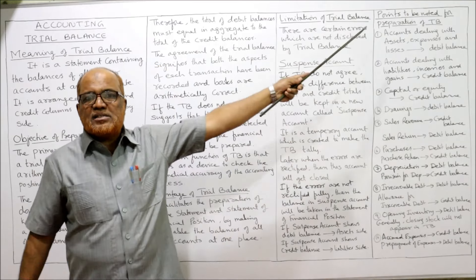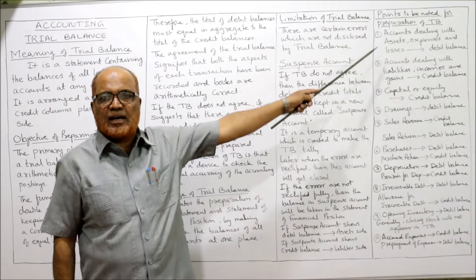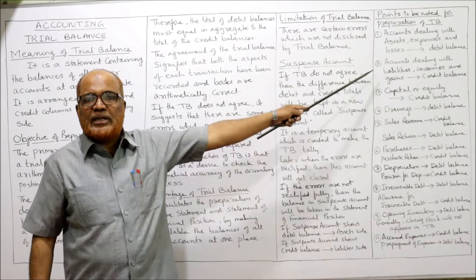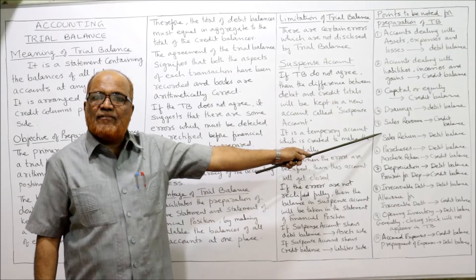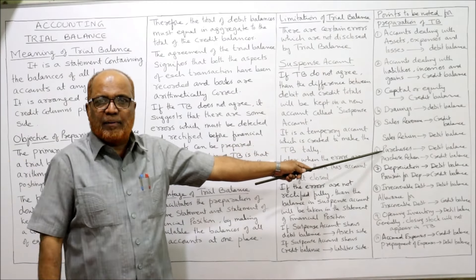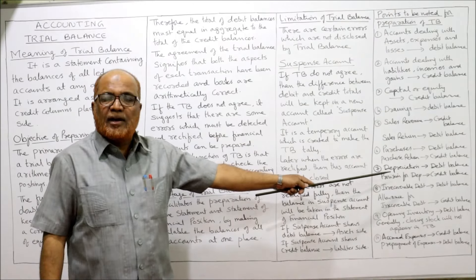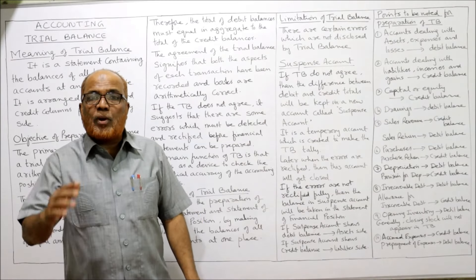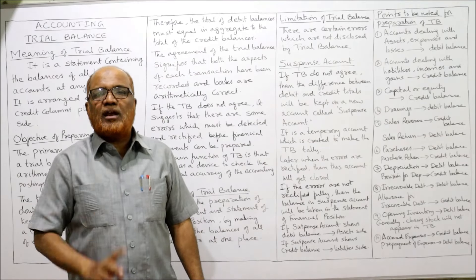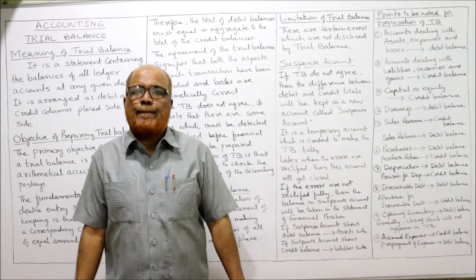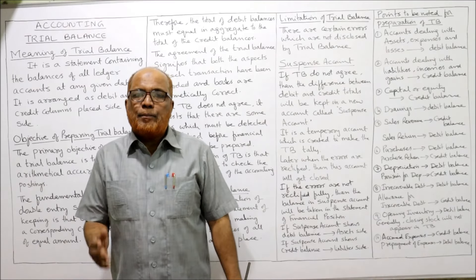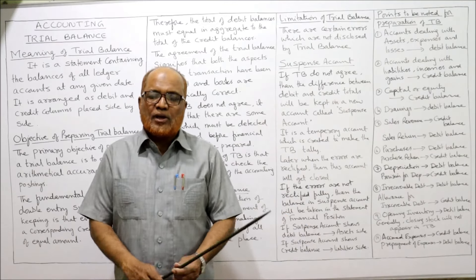To summarize the points: assets, expenses, and losses carry a debit balance; liabilities, incomes, and gains carry a credit balance. Capital or equity — credit balance. Drawings — debit balance. Sales revenue — credit balance; sales returns — debit balance. Purchases — debit balance; purchase returns — credit balance. Depreciation — debit balance; provision for depreciation — credit balance. Irrecoverable debt — debit balance; allowance for irrecoverable debt — credit balance. Opening inventory — debit balance; closing inventory not taken in the trial balance. Accrued expenses — credit balance; prepayment of expenses — debit balance.